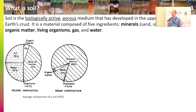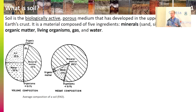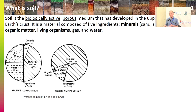I will start with a definition. What is a soil? Soil is defined as a biologically active porous medium that has developed in the uppermost layer of the Earth's crust. It is basically made of five main ingredients: minerals — sand, silt, and clay — soil organic matter, living organisms, gas, and water.